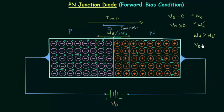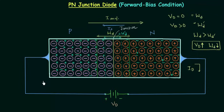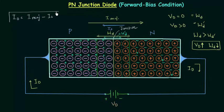On increasing the bias potential, the width of the depletion region will reduce — this is a very important point. In this case we have diode current Id because the circuit is complete. Id is equal to I majority minus I saturation current, where I majority is the diffusion current due to majority charge carriers and Is is the reverse saturation current due to minority charge carriers.